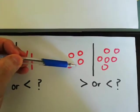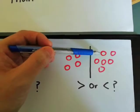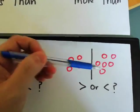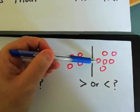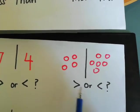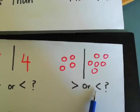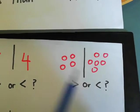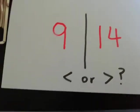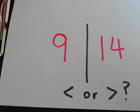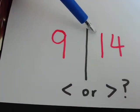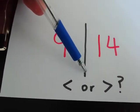Let's count: one, two, three, four — one, two, three, four, five, six. So four is less than six. Which symbol is it — to the right or to the left? Now you try: number nine and number fourteen. Which symbol is it?